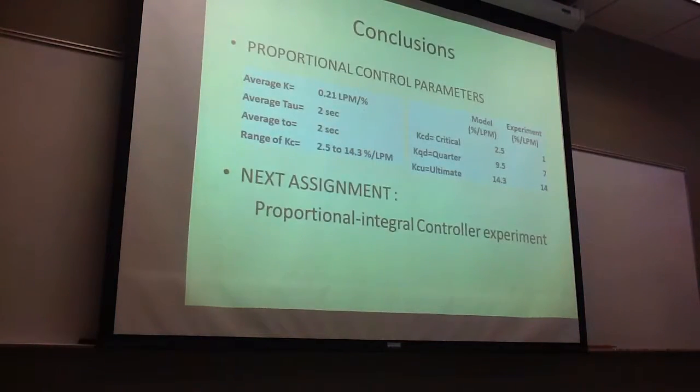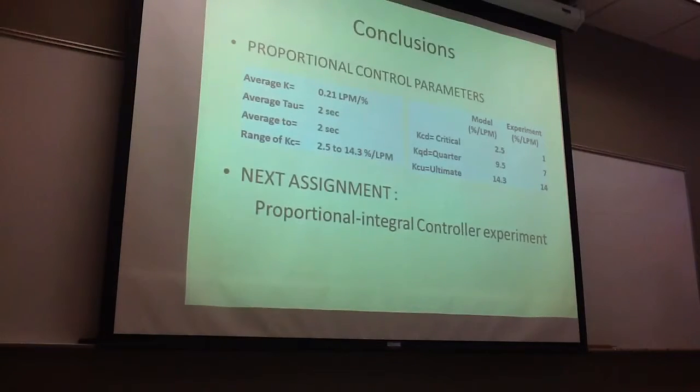So to conclude this presentation, our average gain was 0.21 for our system. The tau was 2, the theta was 2, and we had a range that is reasonable between 2.5 and 14.3.